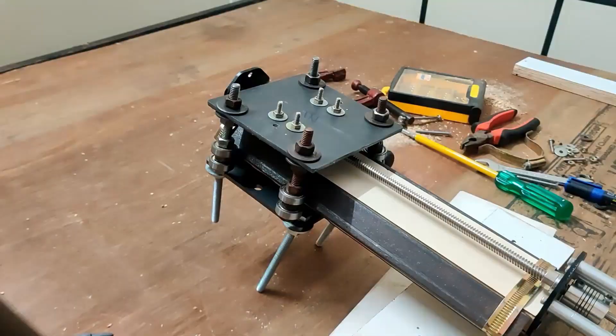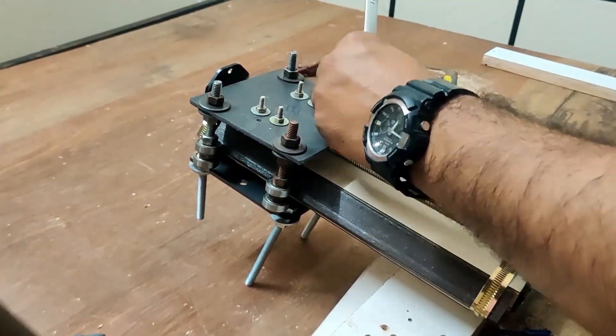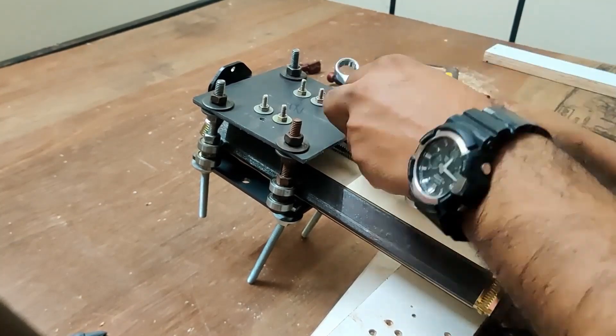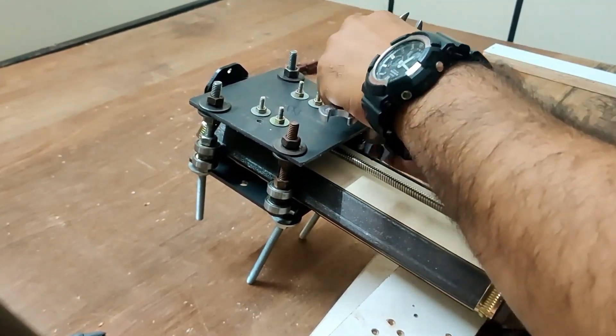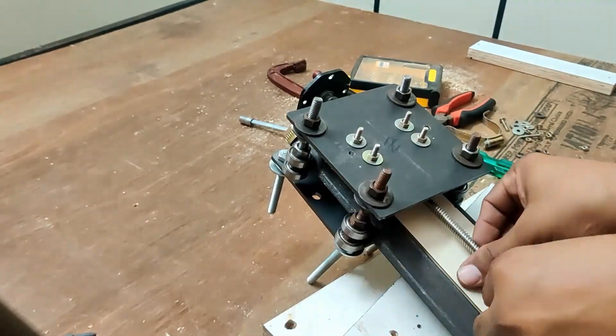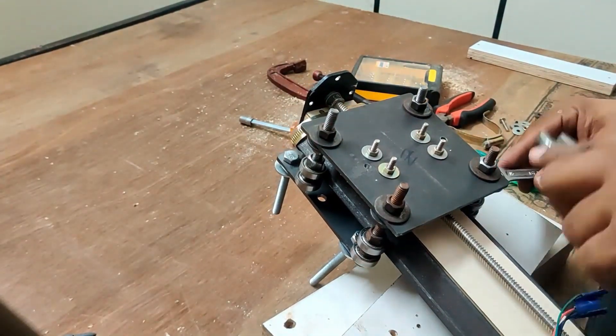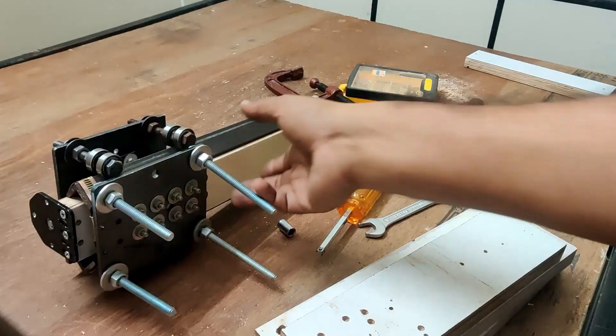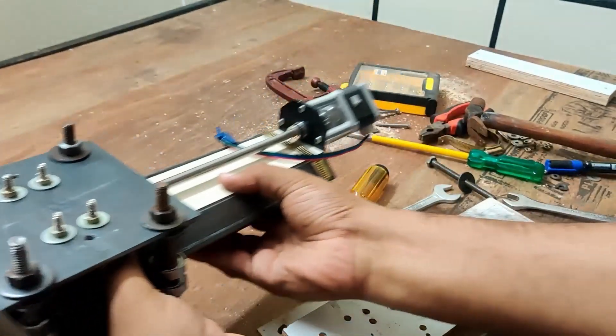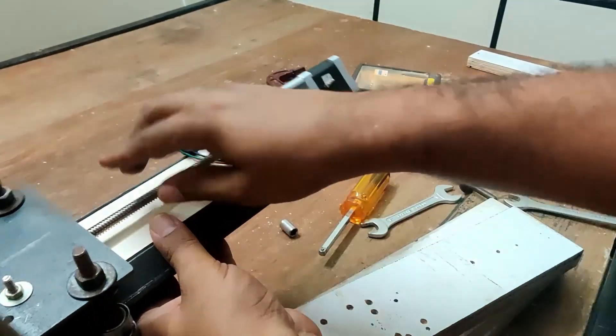This took some time for me, maybe 10-15 minutes. You have to make sure everything is clear, nothing is putting pressure or interfering. Tighten one at a time, don't go all the way. Slowly tighten one after the other and make sure all bearings are touching the angle and it's smooth. At every step you have to keep checking. That's the only thing.